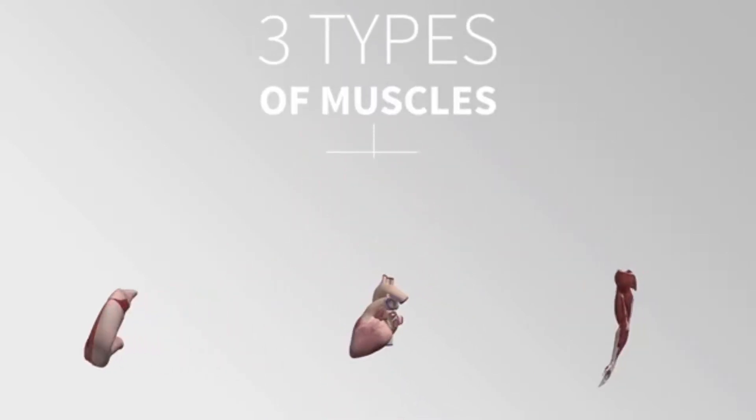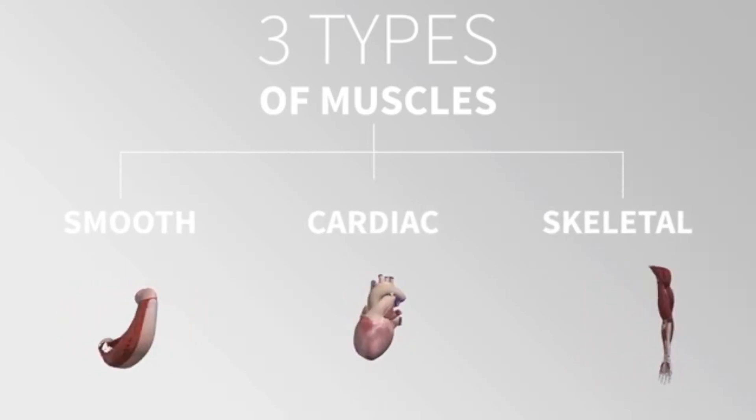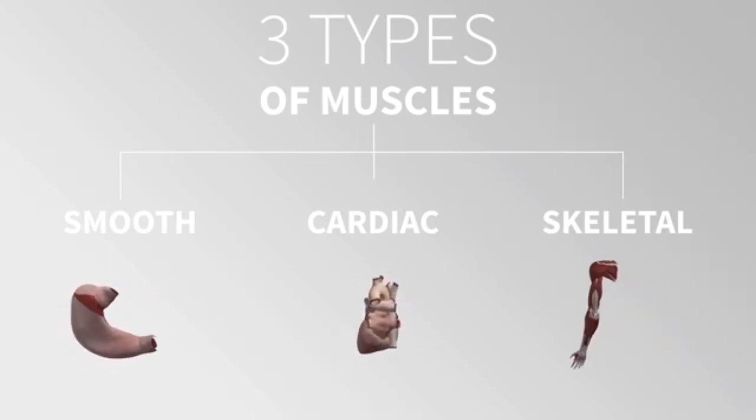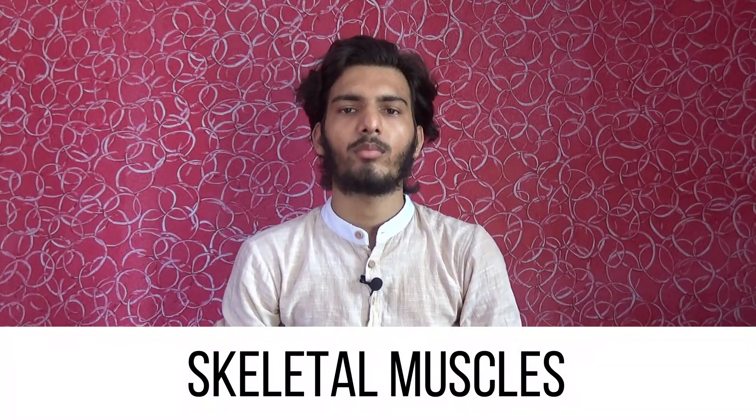There are three types of muscles in our body. The first is cardiac muscle, found in the walls of the heart, whose function is to pump blood throughout the body. The second is smooth muscle, found in the walls of internal organs such as the bladder and uterus. They are also known as involuntary muscles because they are not under our conscious control.